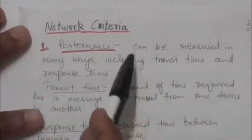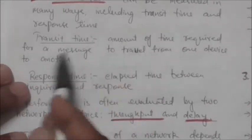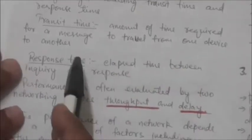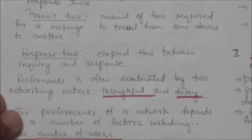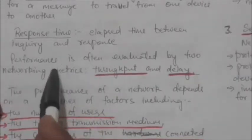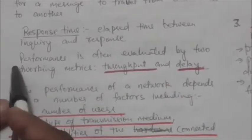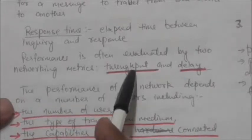The performance of a network can be measured in many ways, including transit time and response time. Transit time is the amount of time required for a message to travel from one device to another. Response time is the elapsed time between an inquiry and a response. Performance is often evaluated by two networking metrics: throughput and delay.